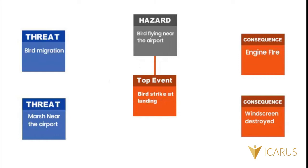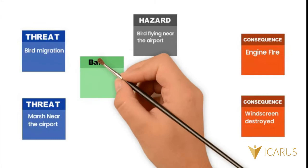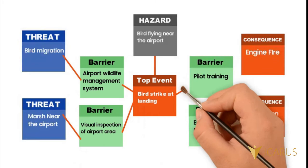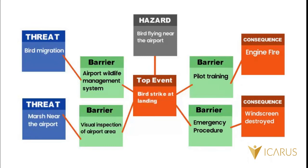Now we have a core bowtie defined, and in order to complete it, we can define barriers. Barriers are control measures that prevent certain events from happening. We can define barriers between threats and the top event, and also define barriers or defenses even if the top event occurs, to stop it from reaching a consequence.